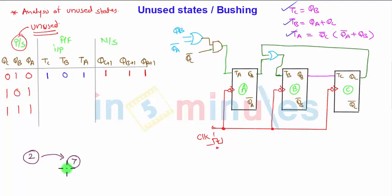We still don't know where state number 7 is going, so we will find it out. For state number 7, TC equals QB, so QB equals 1, this will be 1. TB equals the OR operation between A and C, again it is 1. And TA, that is QC bar multiplied with 0. QC bar is 0, and 0 multiplied with anything is 0.